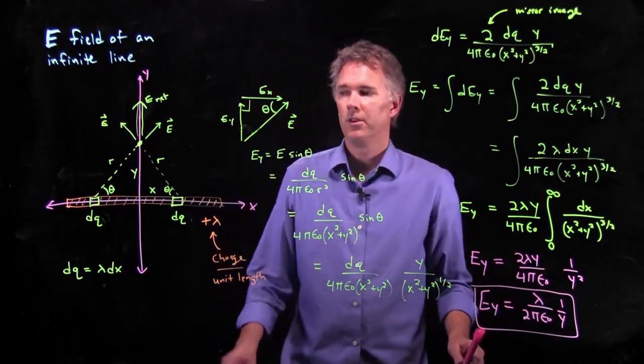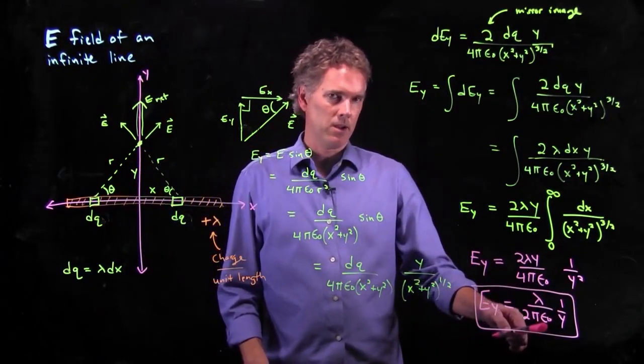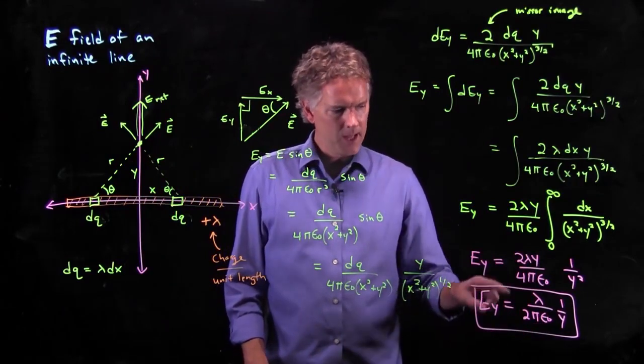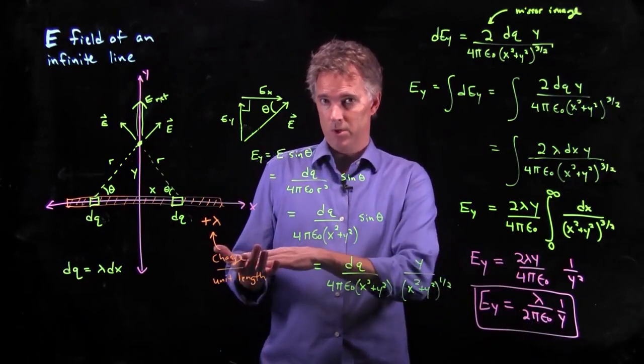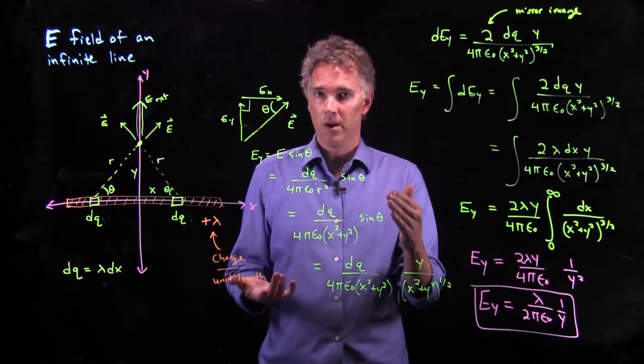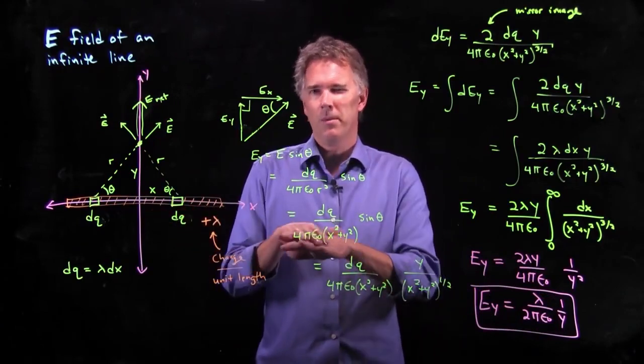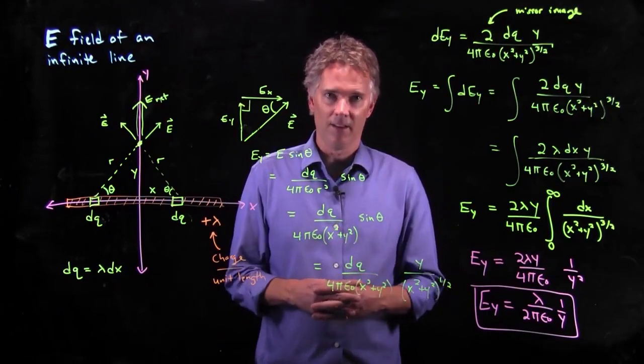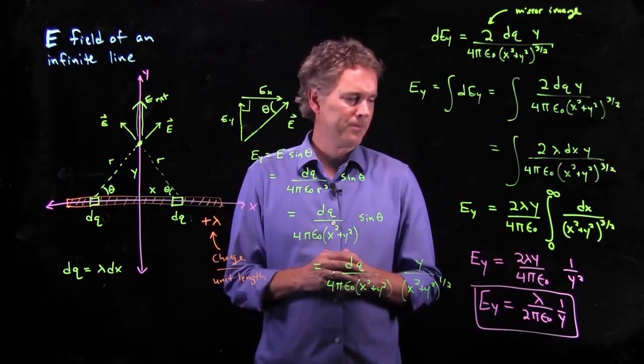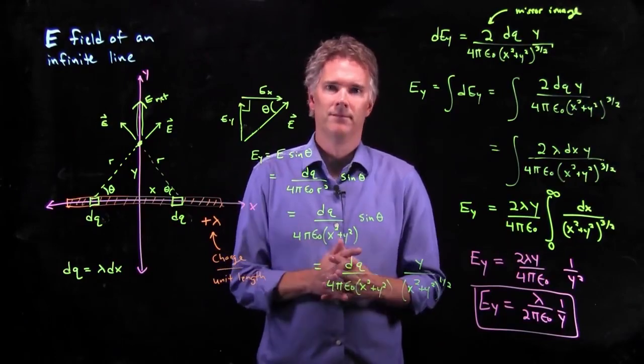What's the electric field a distance y away from an infinite line charge? It's that right there. And it's sort of interesting that it falls off like 1 over y. Remember, the point charges fell off like 1 over r squared. This thing falls off like 1 over r. What about a plane? As we're going to see, a plane, in fact, has a constant electric field above it. That's it for now. Hopefully that's clear. Cheers.